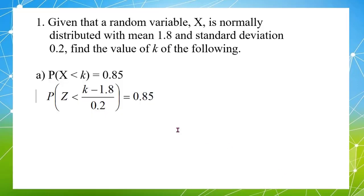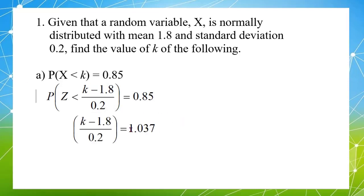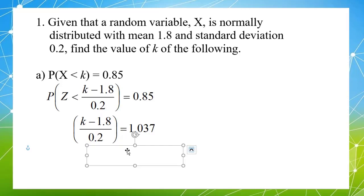Going back to the question, the Z value is 1.037. To find the value of K, we compute 1.037 times 0.2 plus 1.8, which gives K equal to 2.0074.